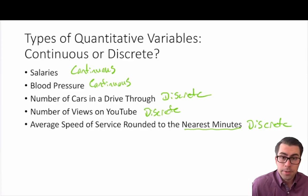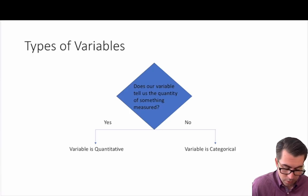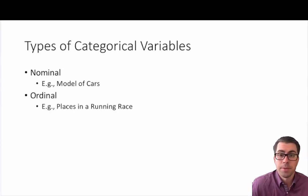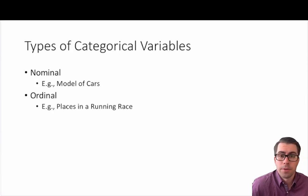Now what happens when we're dealing with a categorical variable — when our variable tells us nothing about the quantity of something being measured? When we work with categorical variables, we typically have two different types: nominal categorical variables and ordinal categorical variables. A nominal categorical variable has no logical order — for example, models of car. You couldn't say a Toyota is better than a Honda or a Honda is better than a Chevrolet. There's no logical order; it's just a model of car.